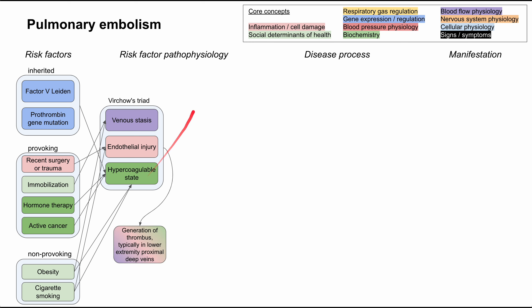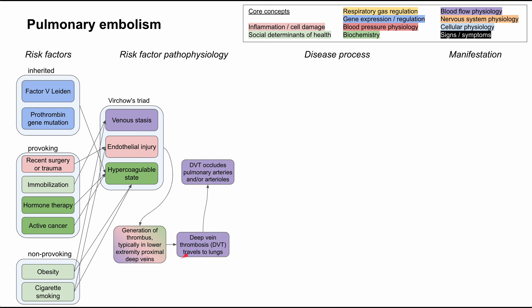In any case, Virchow's triad is well known to contribute to the generation of a thrombus, and the thrombus typically forms in the lower extremities — the proximal region of the lower extremities and the deep veins. These deep vein thromboses, or DVTs, then travel to the lungs, where they occlude the pulmonary arteries and/or the pulmonary arterioles.